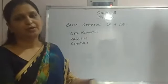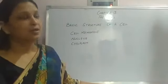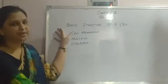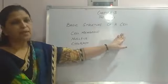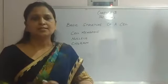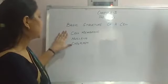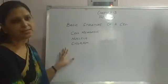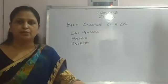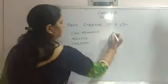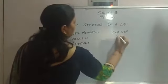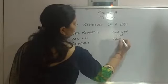Good morning dears, welcome to the class. In the previous class, I explained you about the basic structure of a cell. The basic structure of a cell consists of three parts: cell membrane, nucleus, and cytoplasm. Other than this, I have explained you about cell wall and chromosomes.